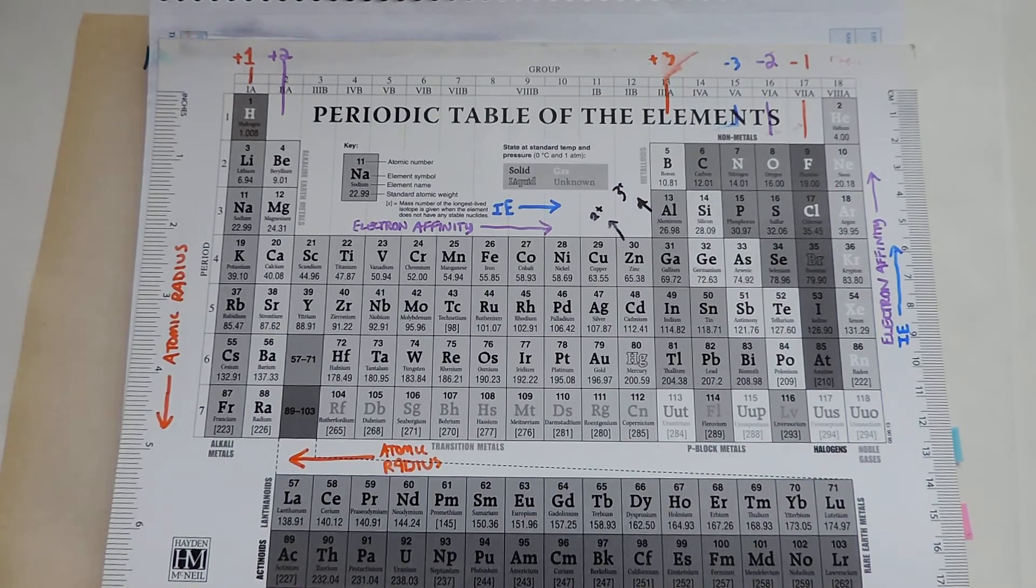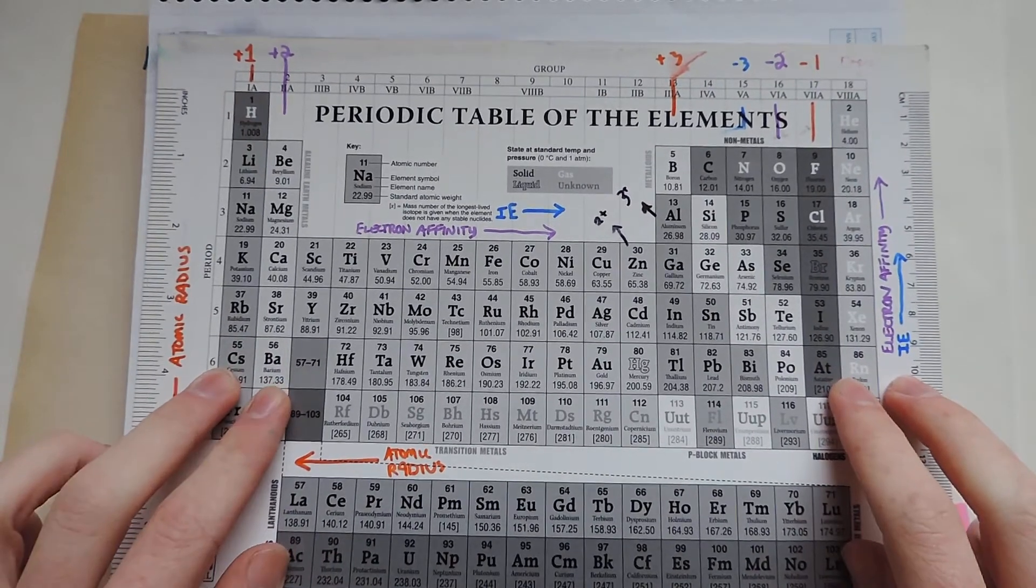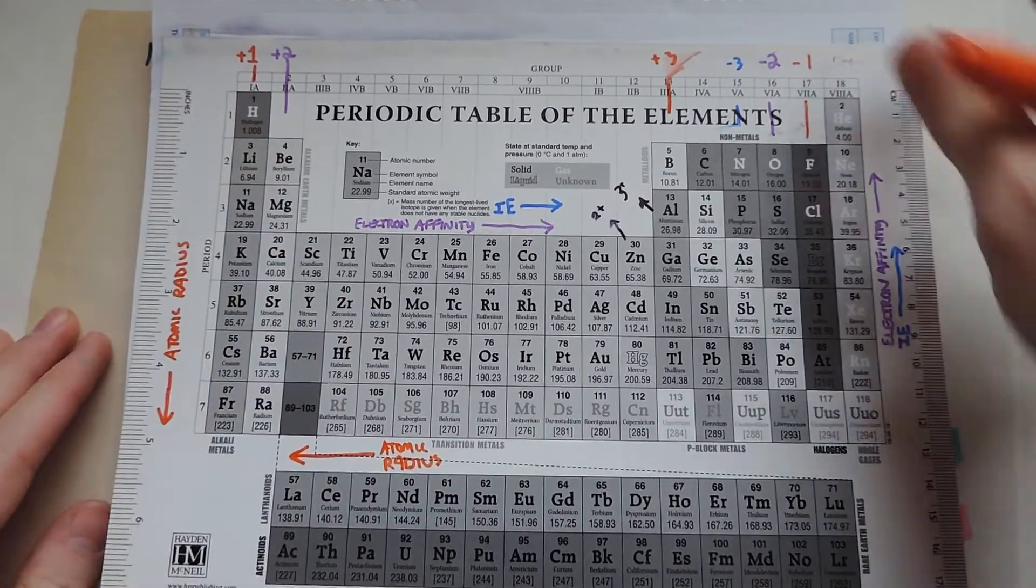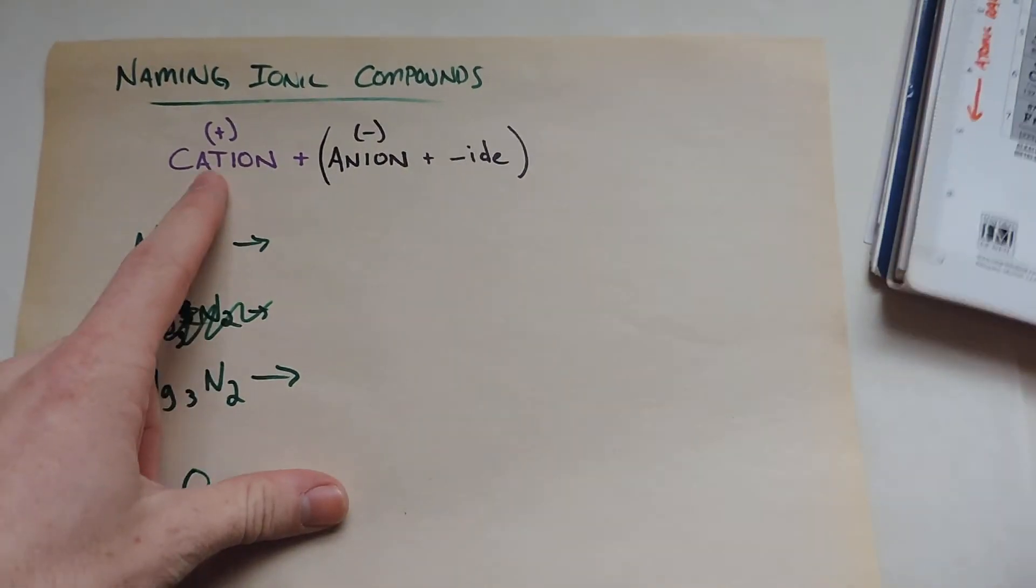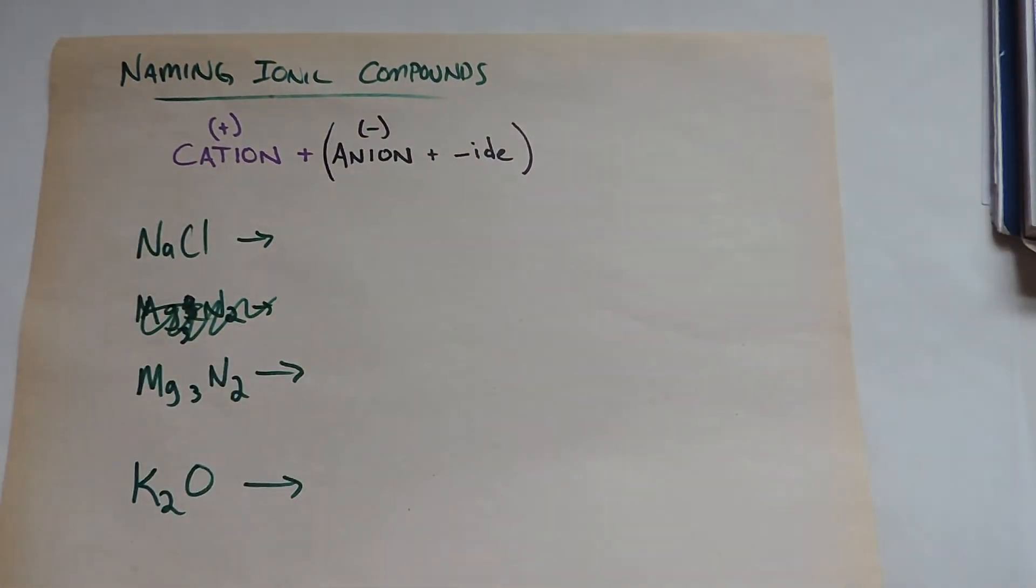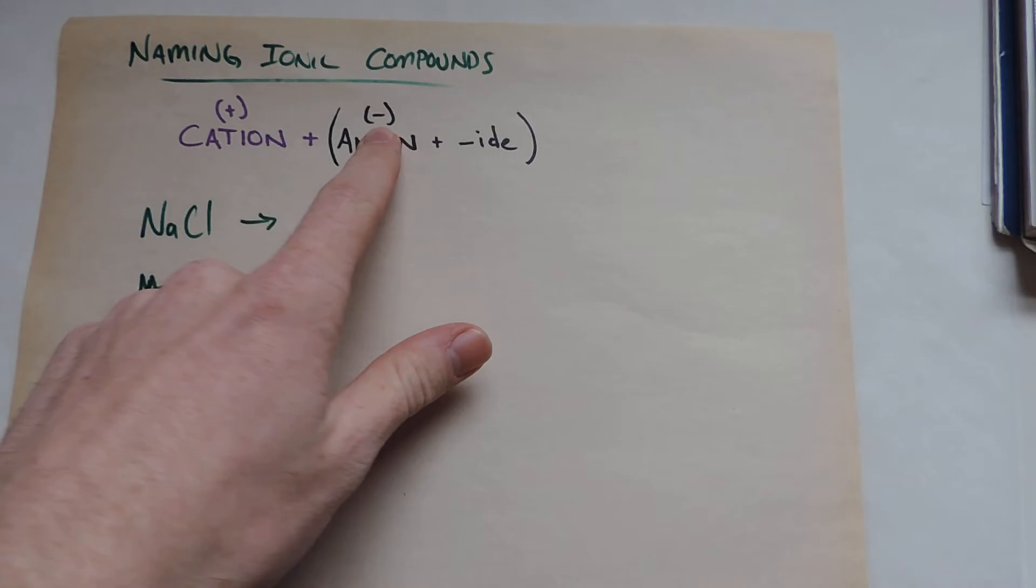So this is how we know what charges we're dealing with. Remember the positives are going to be your cations, because cations are positive, like cat paws. And then the anions are negative.